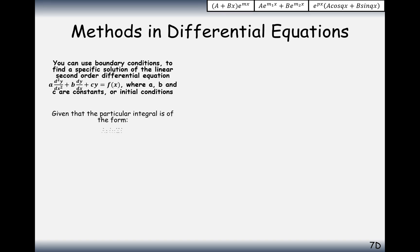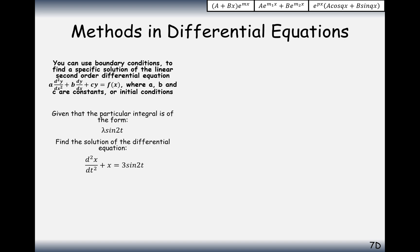Let's look at another one. Find the solution of the differential equation d squared x by dt squared plus x equals 3 sine 2t, given that the particular integral is of the form lambda sine 2t. It's x's and t's instead of y's and x's, but just treat your x's as y's and your t's as x's.